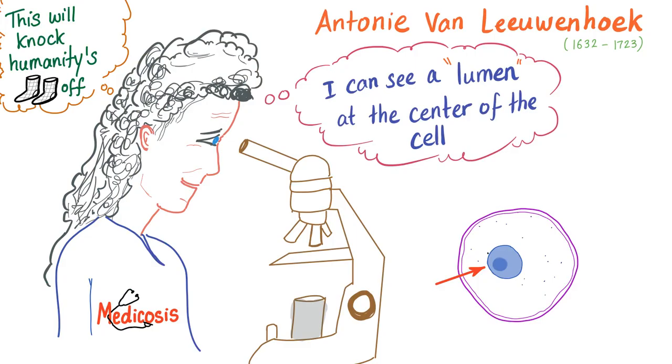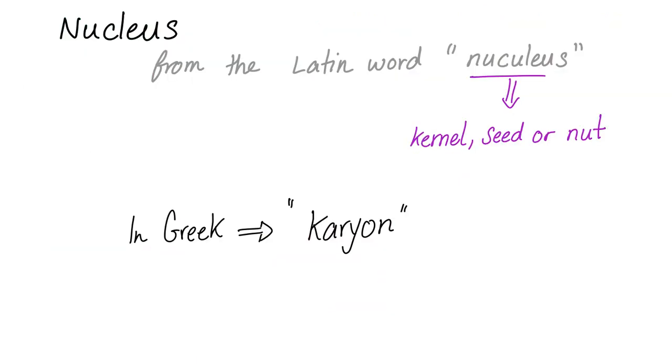Less than 500 years ago, a guy named Anthony van Leeuwenhoek discovered a lumen at the center of the cell. He called it a nut or a carrion or a nucleus. Nucleus literally means kernel, seed, or a nut. In Greek, it's called carrion.